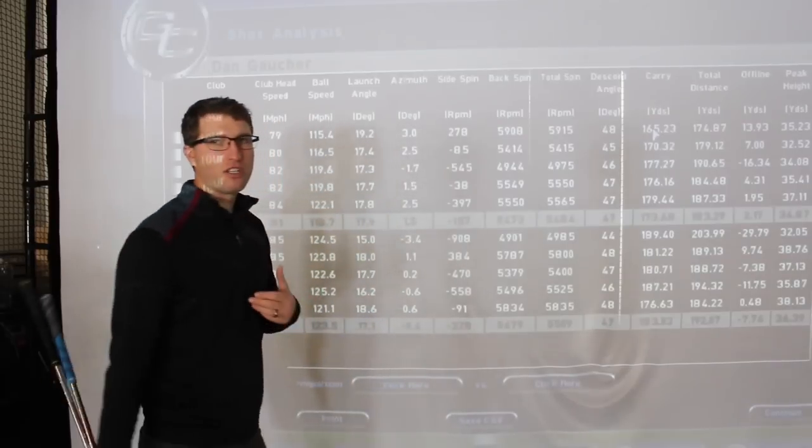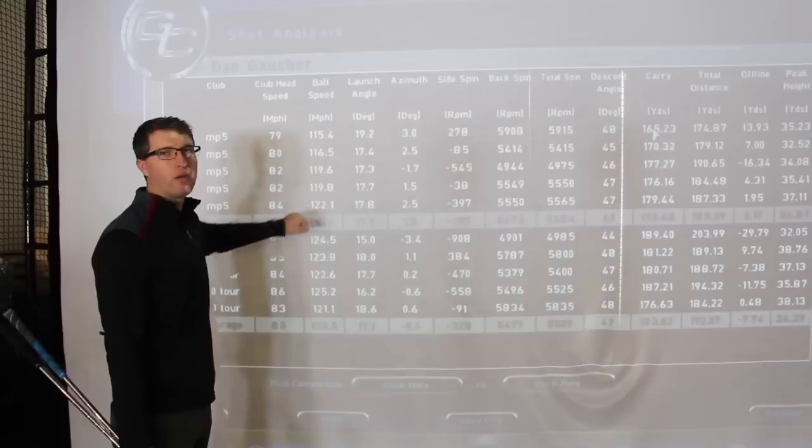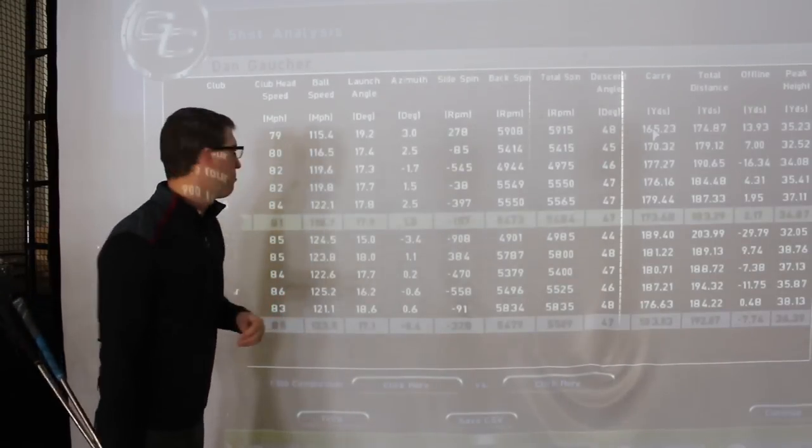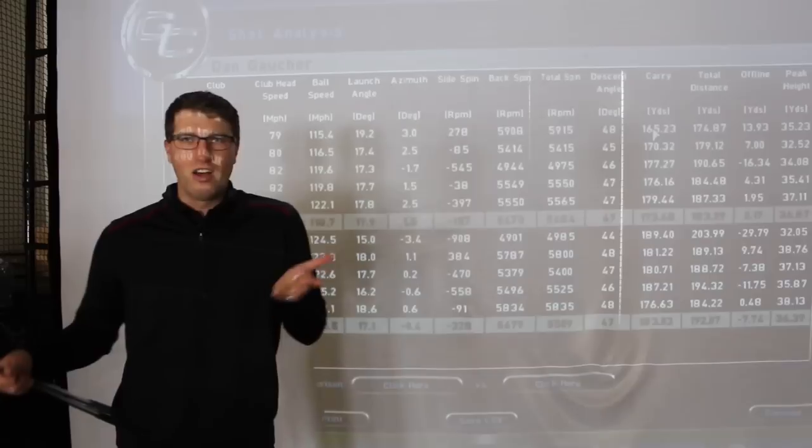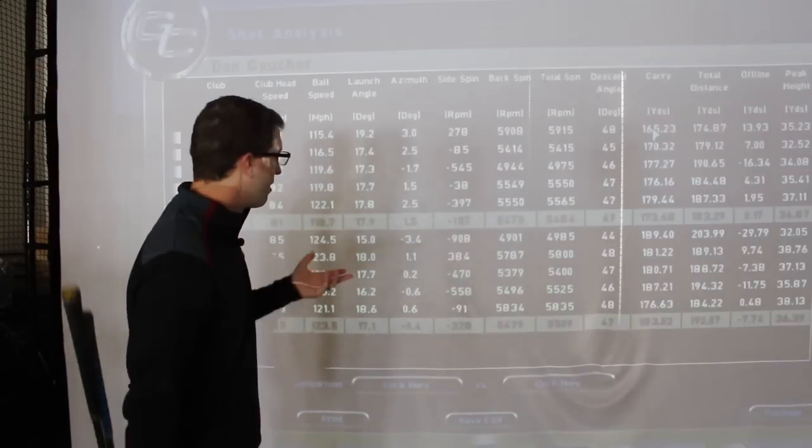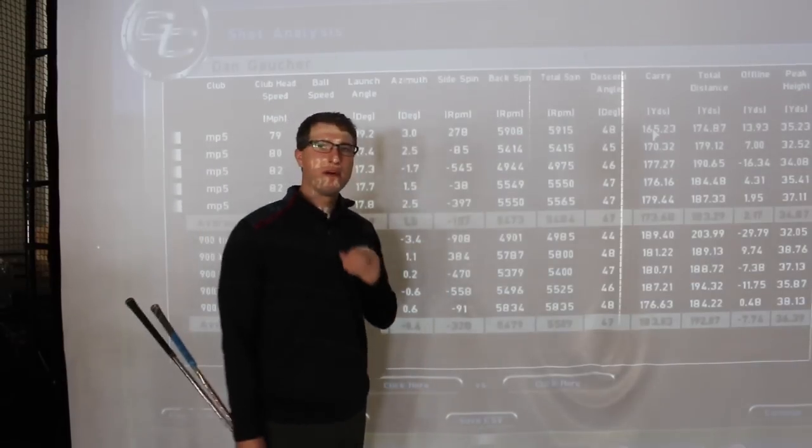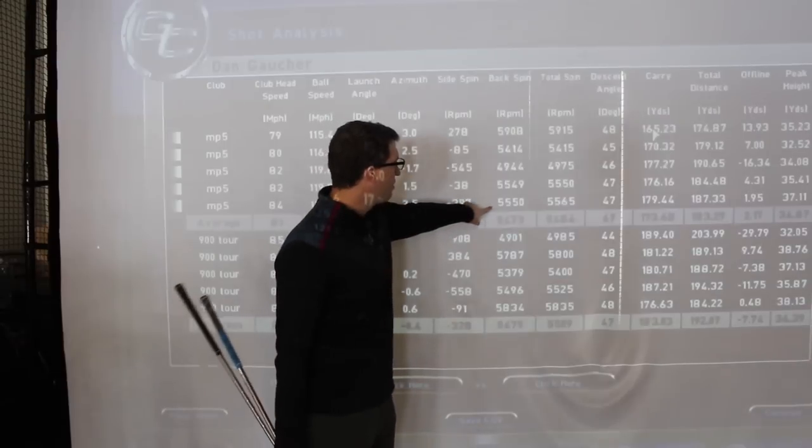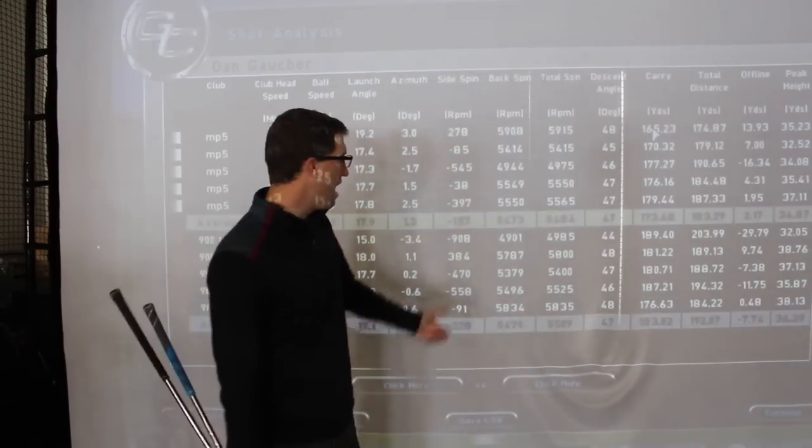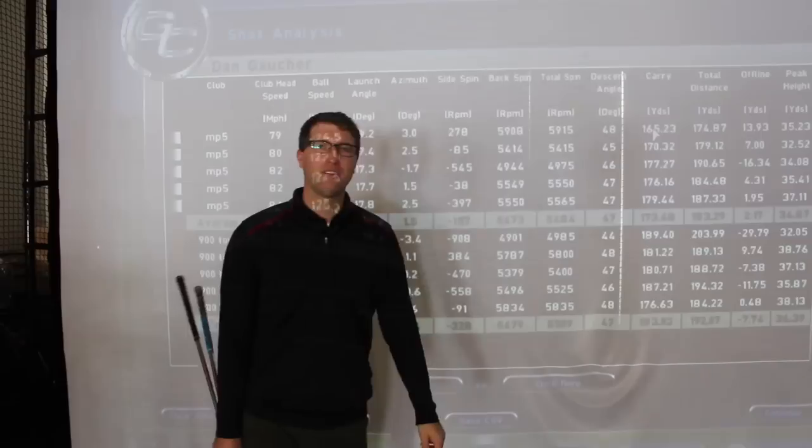So if we look at just the last one on each of these, ball speed was 122.1 with the MP5, and then with the 900 tour it was 121.1. So effectively exactly the same, we were less than a mile an hour, probably right at a mile an hour difference there. Same thing, if we go to the spin numbers now, I was 5550 with the MP5, and then with the JPX 900 tour I was 5834.